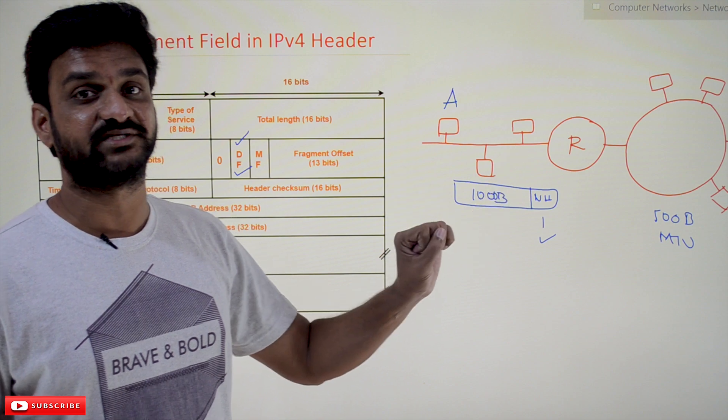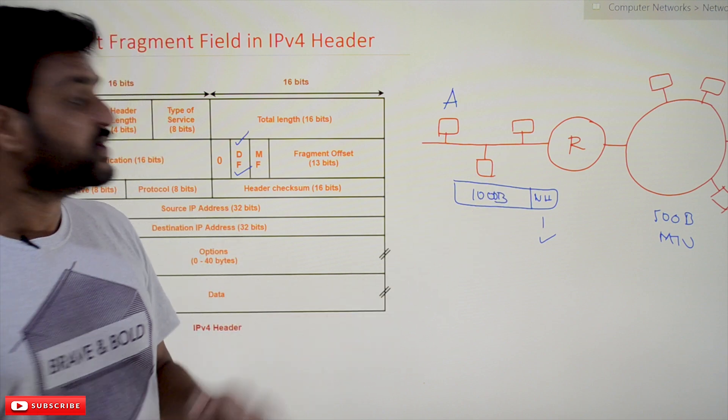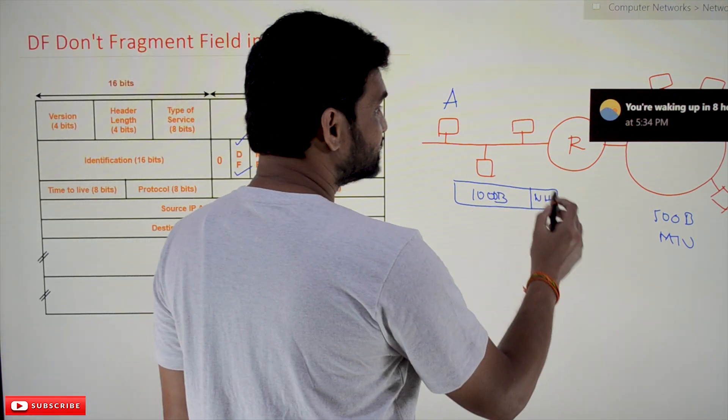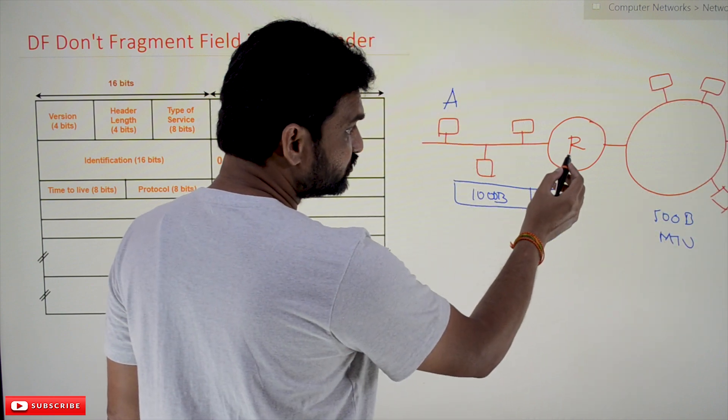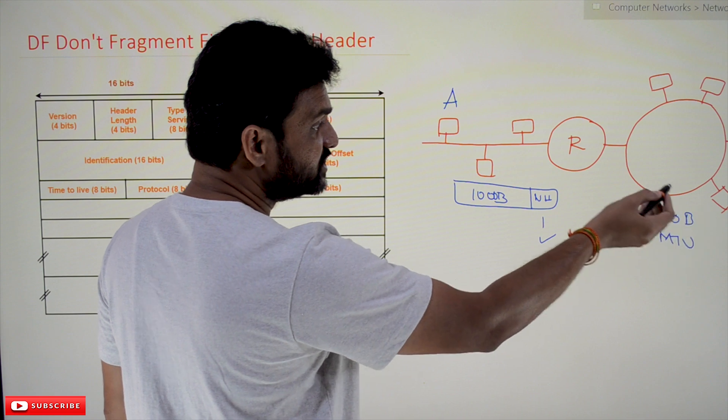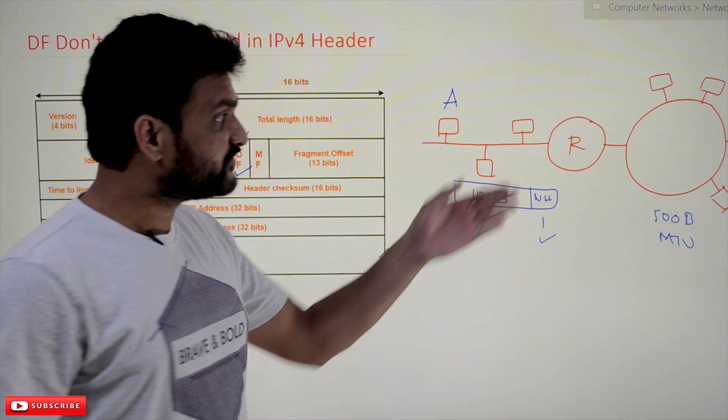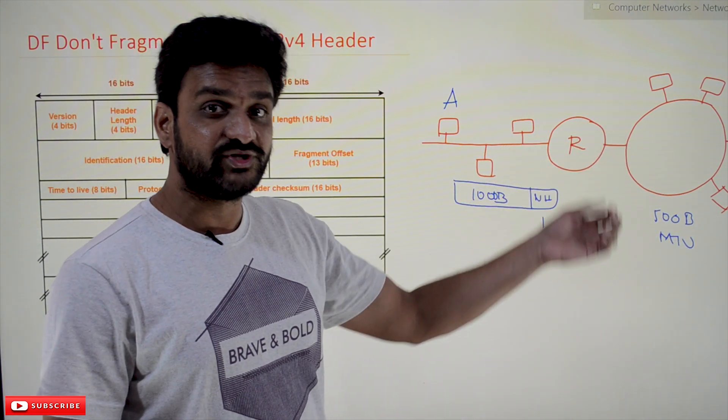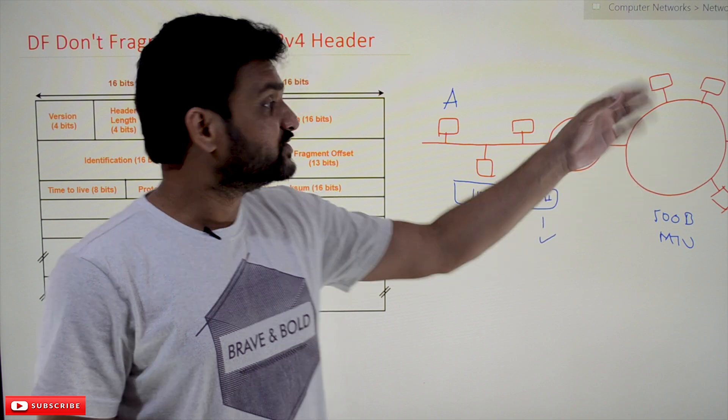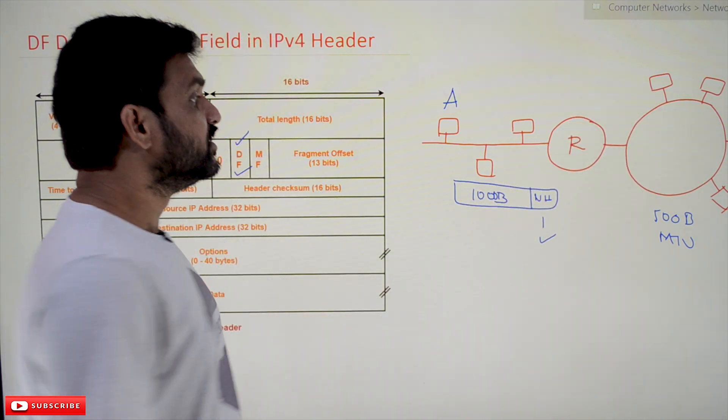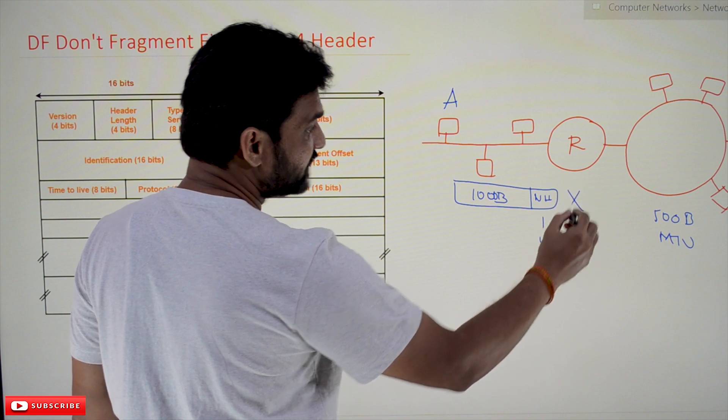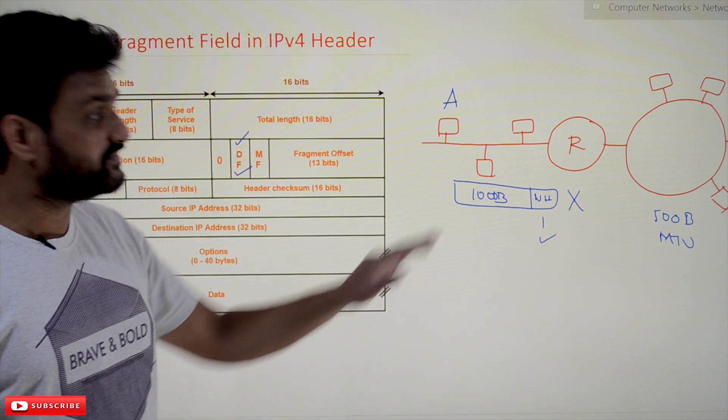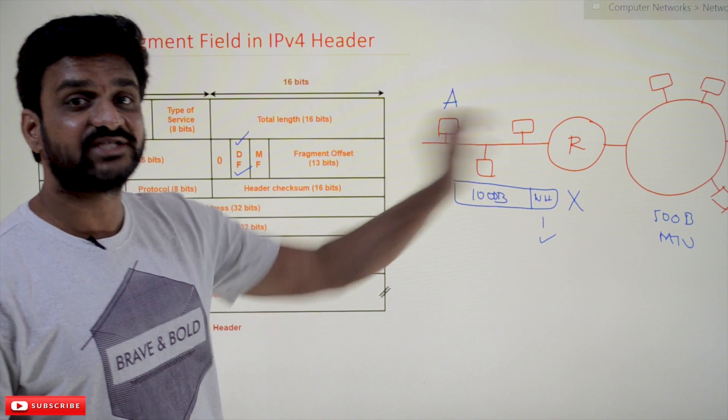Now, what will the router do? If it needs to divide it into fragments (otherwise it's not possible for this router to transmit it into this network), and the DF is set to one, the router will discard this packet. This means it's not going to transmit it further.